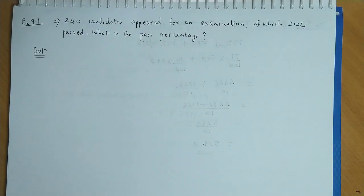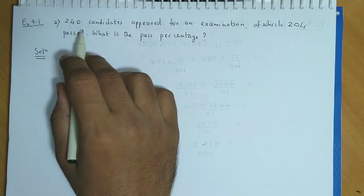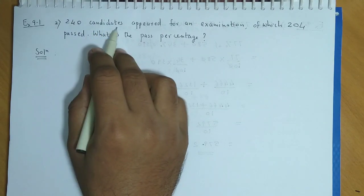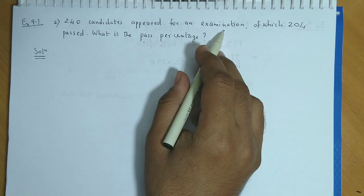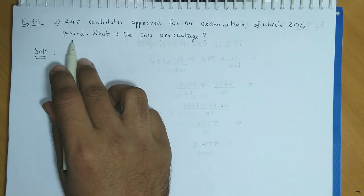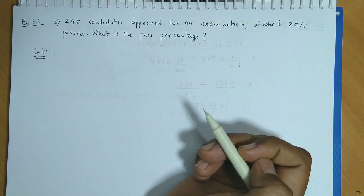Exercise 9.1 Question No. 2. 240 students or candidates appeared for an examination of which 204 passed. What is the pass percentage?